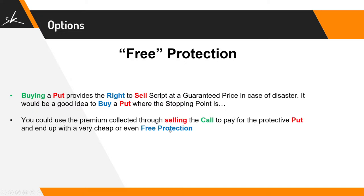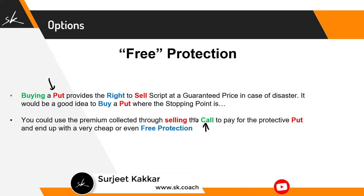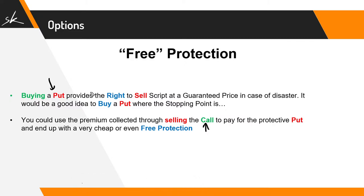You could use the premium collected through selling a call — this is what we talked about in lesson seven, which was renting stocks. When we talked about renting stocks, we were selling an out-of-the-money call at our target, which was giving us some money credited into our account. Now, what we do is use that money from selling the call to buy the put. Basically, I'm not using money from my pocket — somebody is paying me for that renting effect, and whatever money I'm getting, I'm using it to protect my position. You end up with very cheap or at times even free protection.